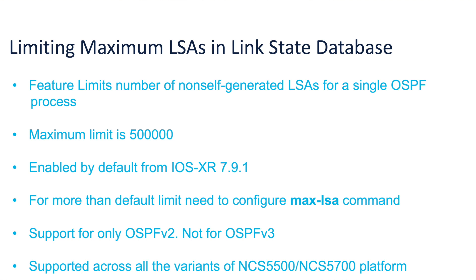With this feature, the router keeps account of the number of non-self-generated LSAs it has received. The non-self-generated LSAs for a given OSPF process is limited to 500,000. The max LSA limit was not enabled by default prior to 7.9.1 release. Starting from release 7.9.1, this command is enabled by default and the default limit of the non-self-generated LSA is set to 500,000. If you have more than 500,000 LSAs in a network, you must configure the max LSA command with the expected LSA scale before upgrading to 7.9.1.